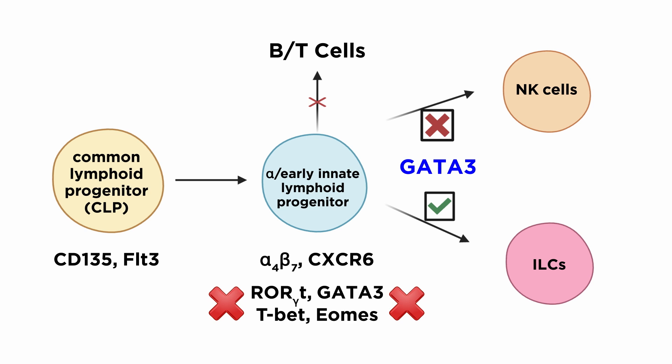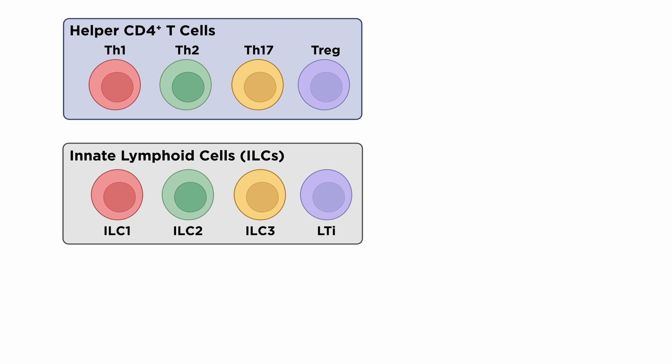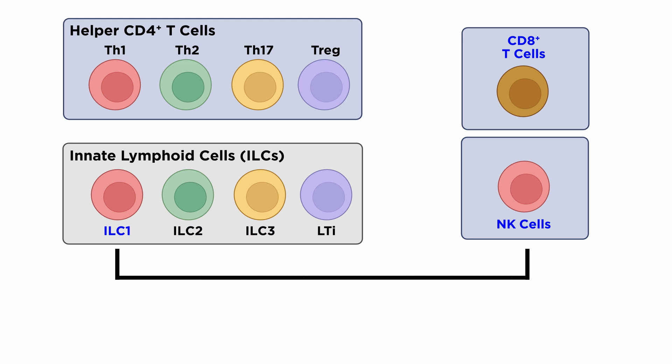A key distinction between the two lineages is based on the dependency on the transcription factor GATA-3. Helper ILC subsets require GATA-3 for differentiation, whereas NK cells can develop normally in GATA-3-deficient mice. The developmental pathways of ILCs in humans and their respective transcription factors are less well-defined compared to ILC development in mice. Recent research suggests that all human ILCs can be generated via an ROR-gamma-T-plus developmental pathway from a common progenitor in secondary lymphoid organs. The nomenclature for ILCs proposed in 2013 classifies these cells into groups 1, 2, or 3. ILC1s, ILC2s, and ILC3s mirror CD4-plus T helper cells Th1, Th2, and Th17, respectively, in terms of function, whereas natural killer cells belonging to ILC1 mirror the functions of CD8-plus cytotoxic T cells.